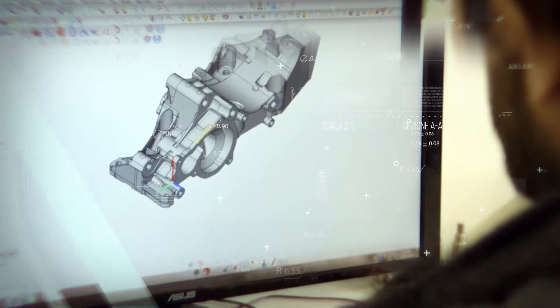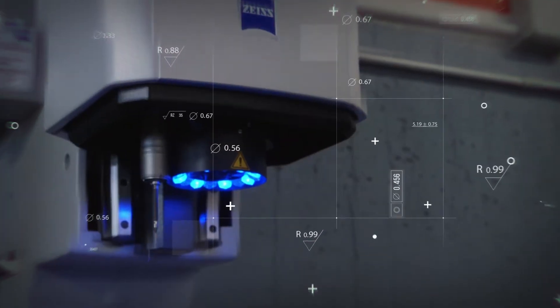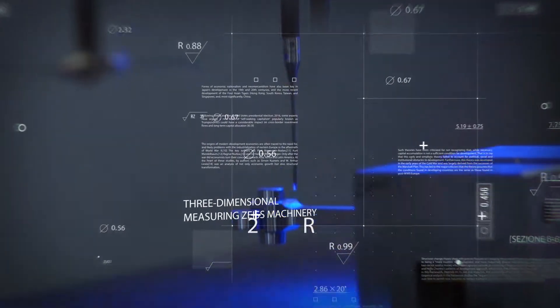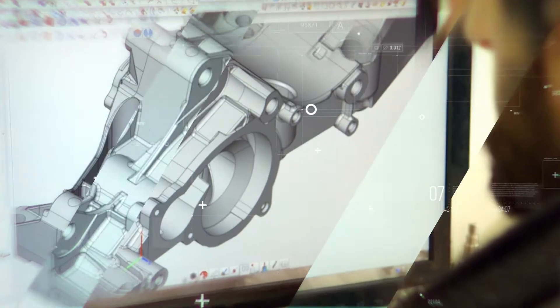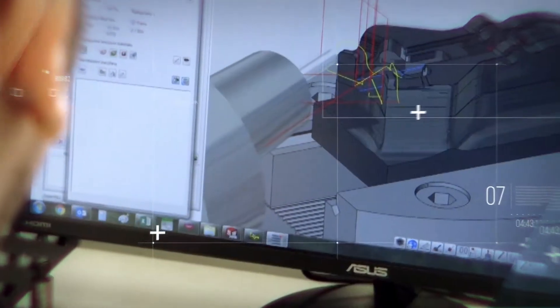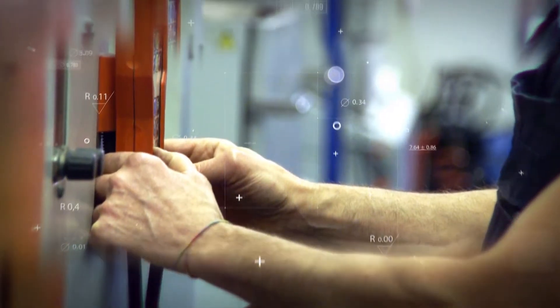Valtechne has at its disposal the most modern CAD-CAM planning and simulation technology available. A high-tech quality control department featuring three-dimensional measuring Zeiss machinery, which is operated by a young dynamic engineering team capable of satisfying any and all customer requirements.